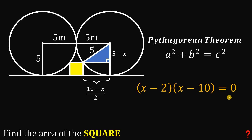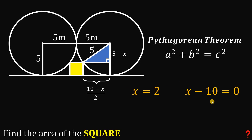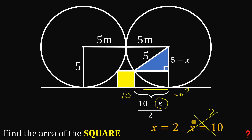Since (x − 2)(x − 10) = 0, either x = 2 or x = 10. We must check both: if x = 10, then the leg (5 − x) = −5, which is impossible, and the segment (10 − x)/2 = 0, meaning the square would have a side of 10 meters — not geometrically valid. So x = 10 is rejected, and the only valid solution is x = 2.